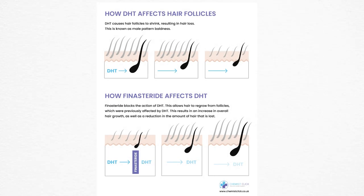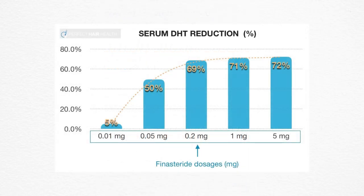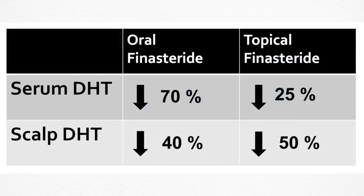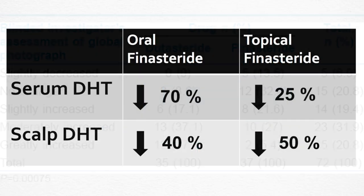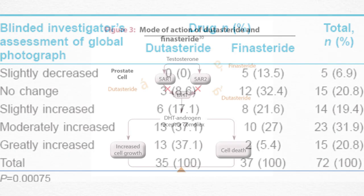Finasteride causes DHT to be lowered systemically by 70%, and on the scalp between 40 to 50%. Dutasteride is similar to finasteride, but it differs in that it prevents both type 1 and type 2 5-alpha reductase enzymes from turning testosterone into DHT.